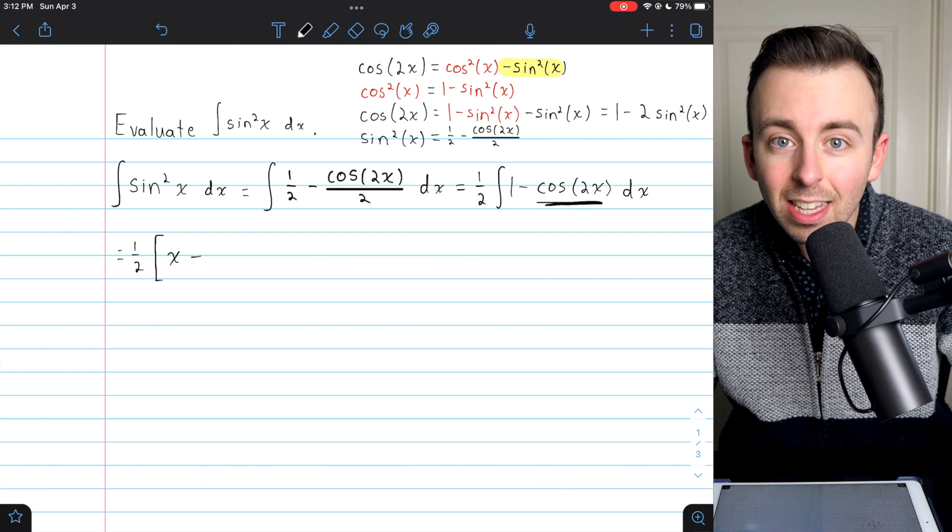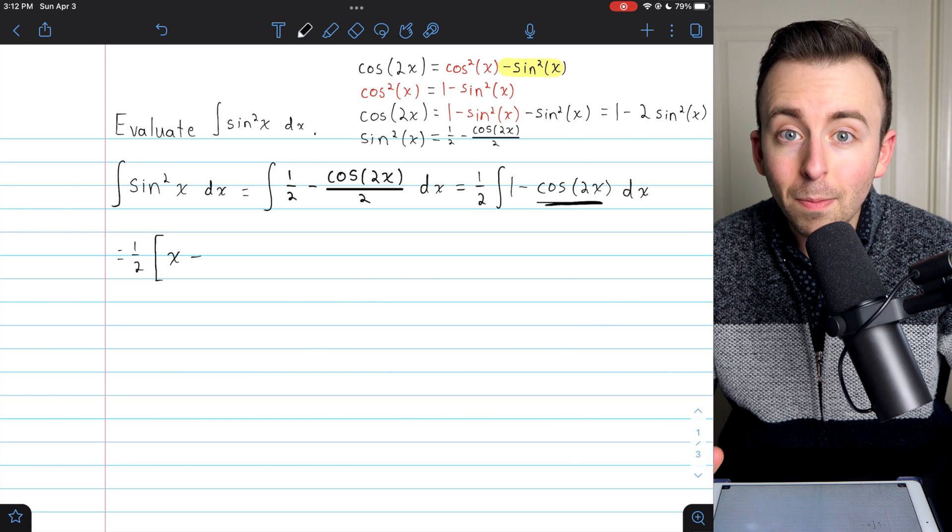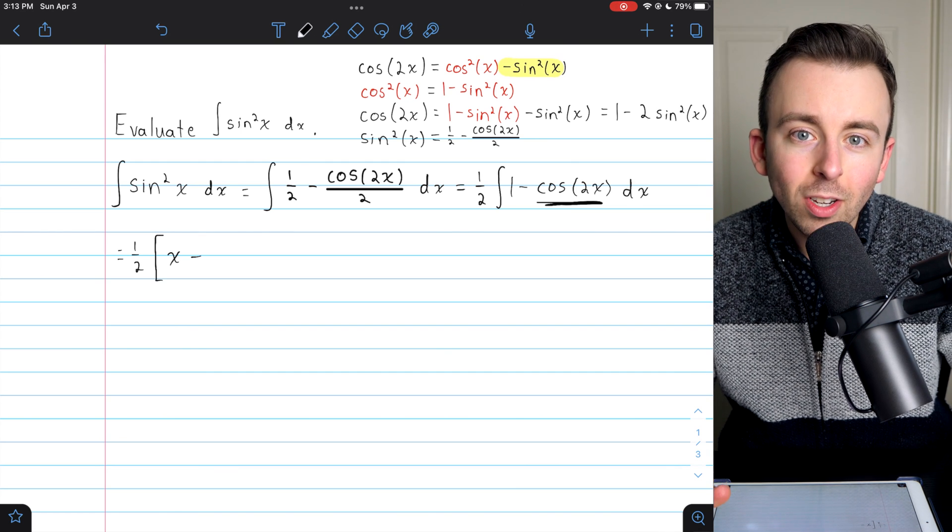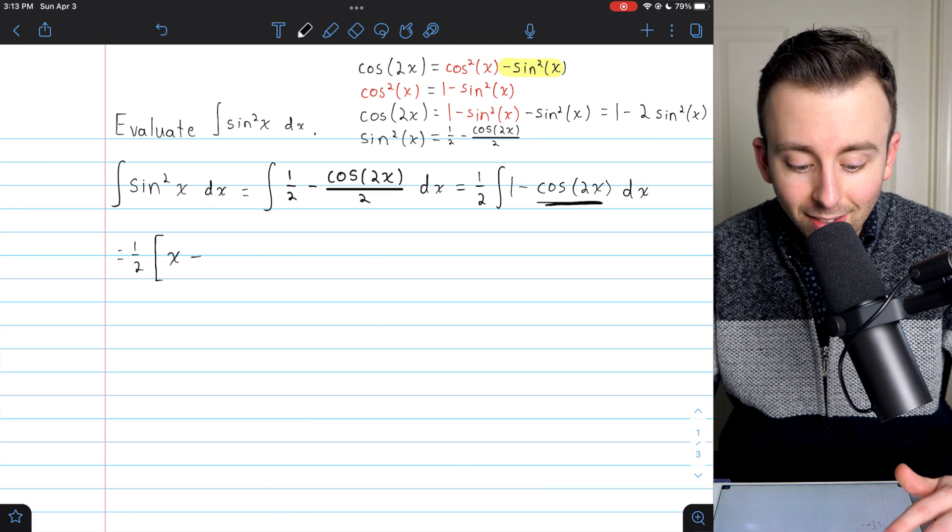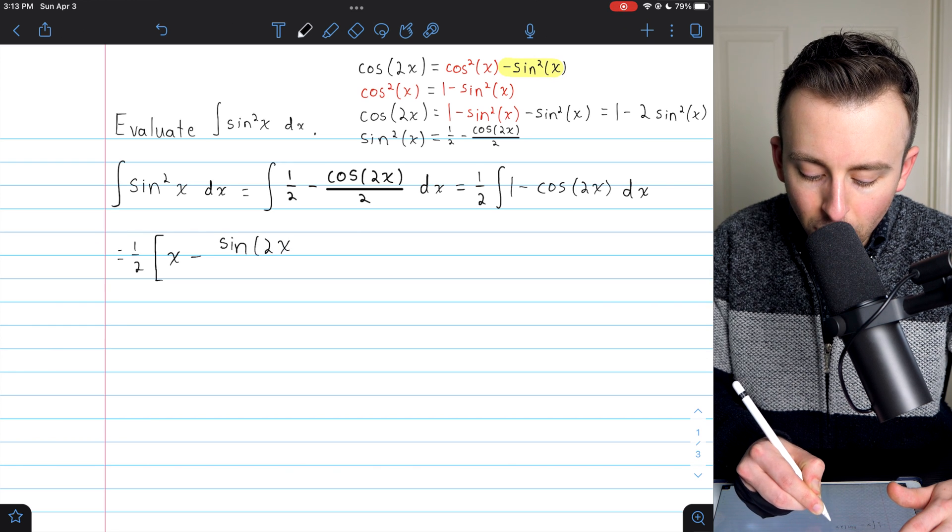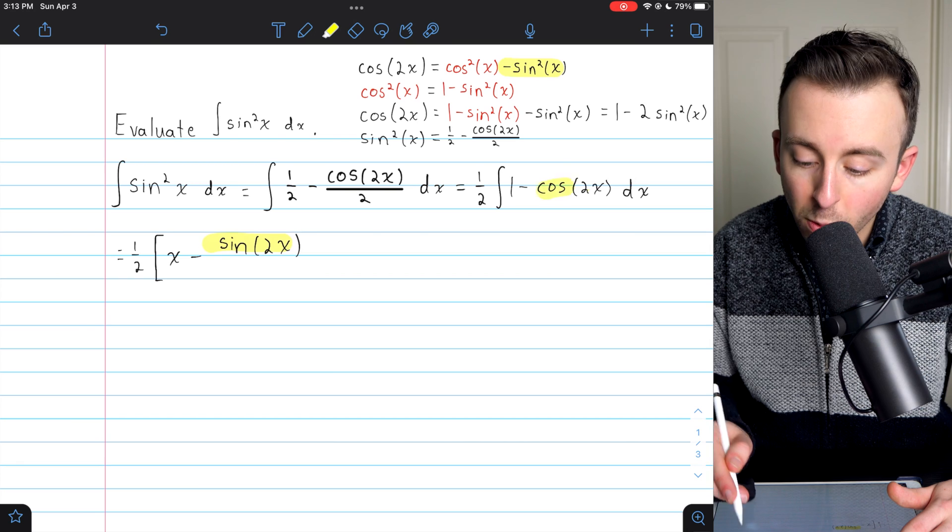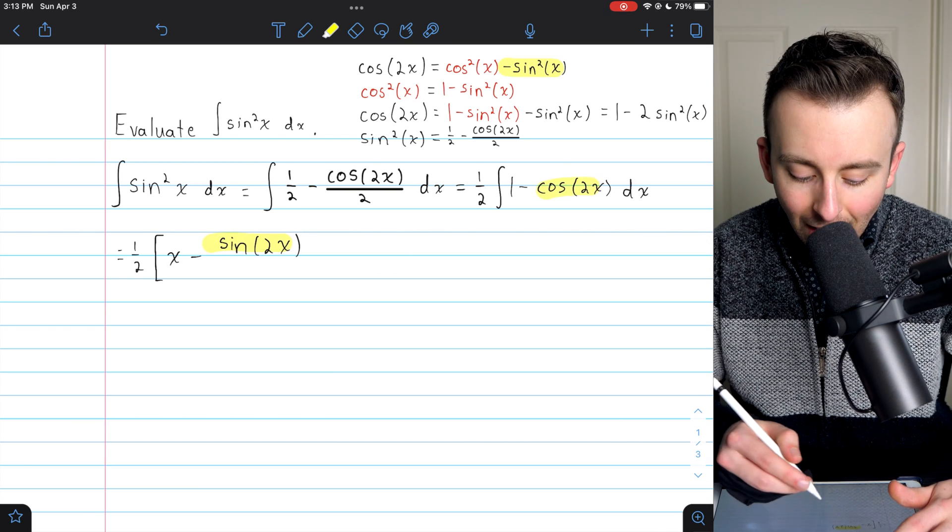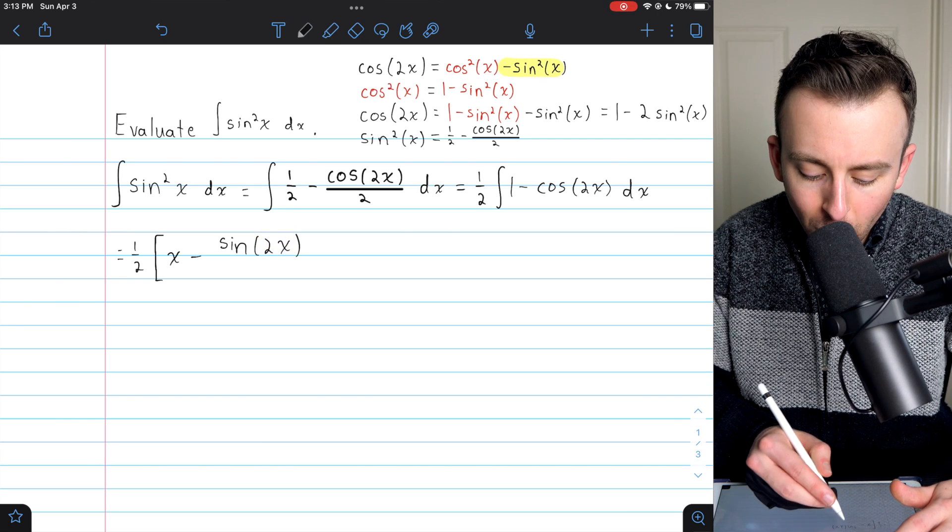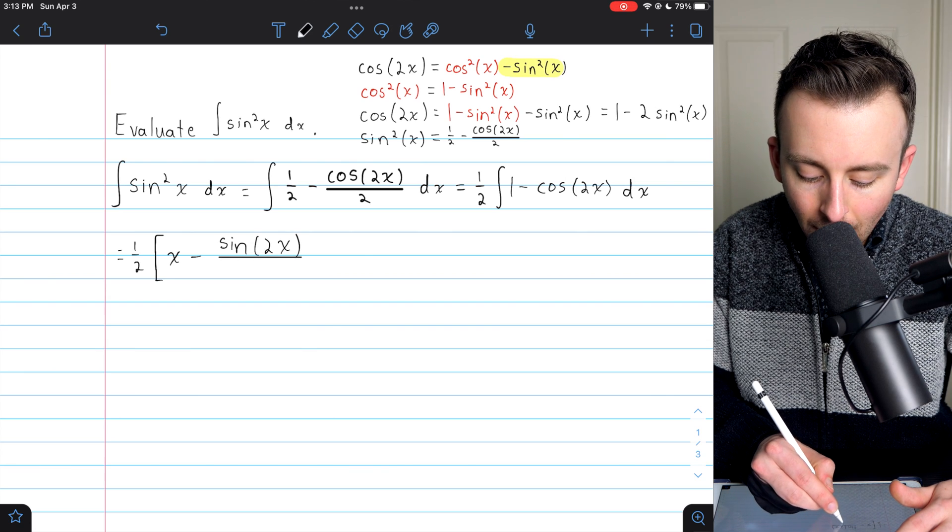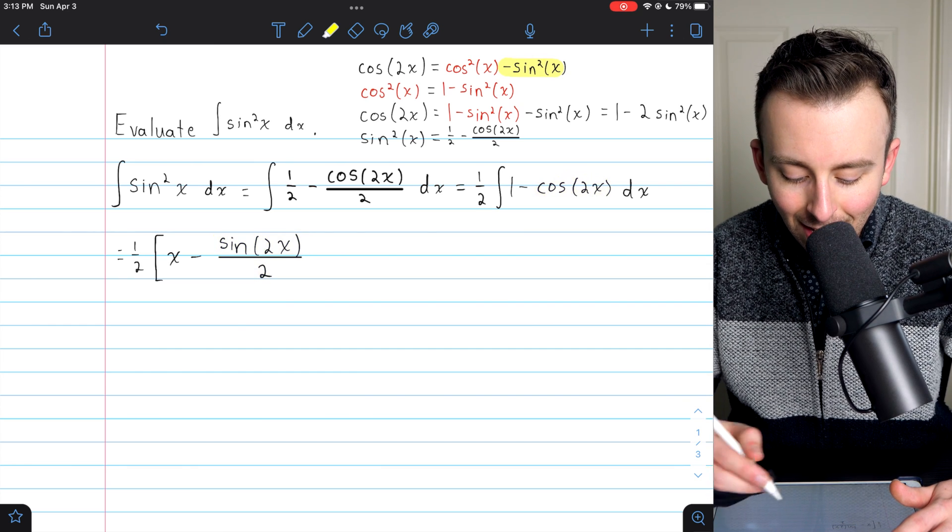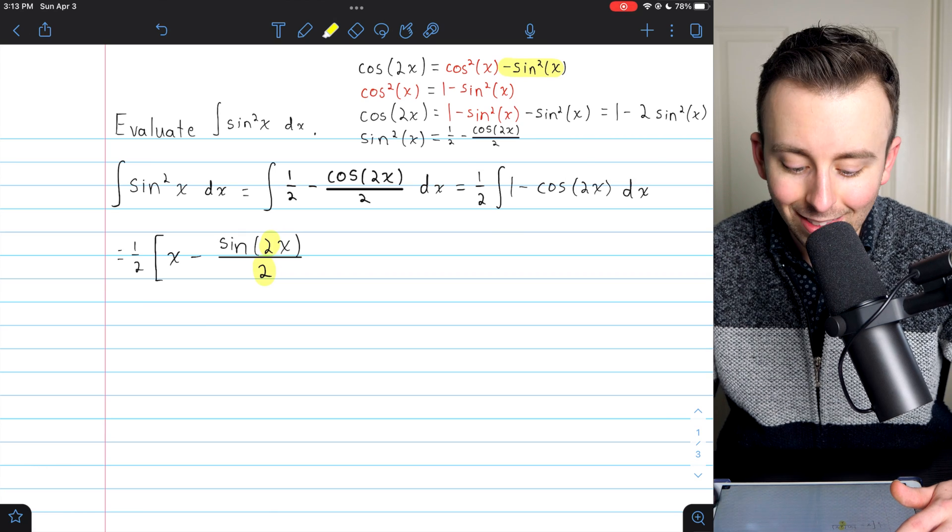Well, this can be taken care of easily with a u substitution, but it's the sort of really basic u substitution that you should be able to do by just thinking through it. What function is going to give us a derivative of cosine? That's going to be sine. So we're going to need sine of 2x. The derivative of sine of 2x gives us cosine of 2x, but then it also gives us a factor of 2 because of the chain rule, and we need to get rid of that. So we just have to divide this by 2. If we take the derivative of sine of 2x over 2, we'll get cosine of 2x, and then the factor of 2 will cancel out with the 2 in the denominator.